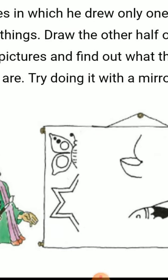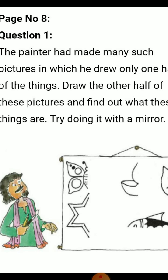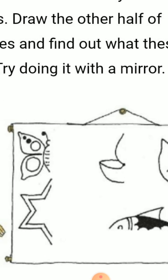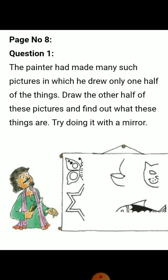As you know, symmetrical objects can be divided into equal halves. The same concept this painter has used here for drawing these pictures — he has drawn only the half part and the half portion you have to complete. I hope that as you all know these concepts — symmetrical and asymmetrical shapes as well as mirror halves — you can do this part by yourself very easily.